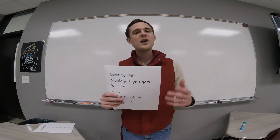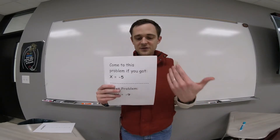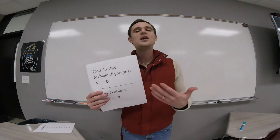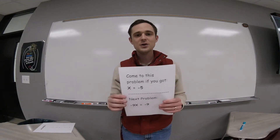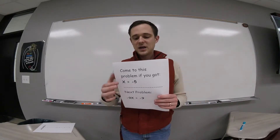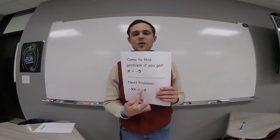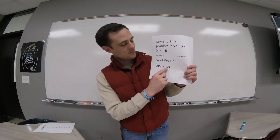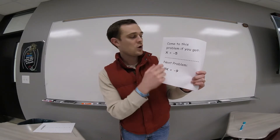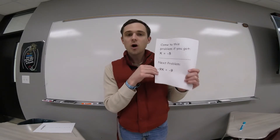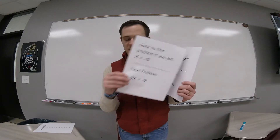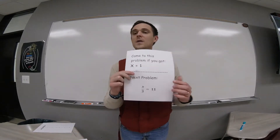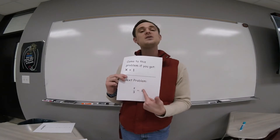That's where they'll start. I have 15 different stations here, so if you have more than 15 kids, you'd have to double up. The kid will solve the problem — for example, negative 9x equals negative 9, so x equals 1. Then they look for the card that has x equals 1, and that becomes the next problem to solve.